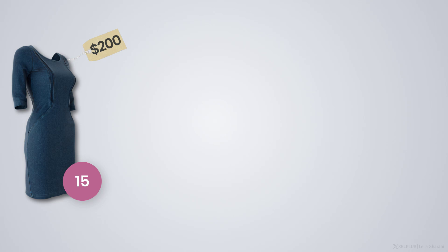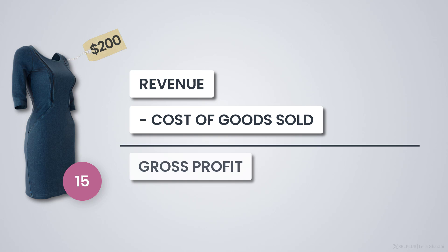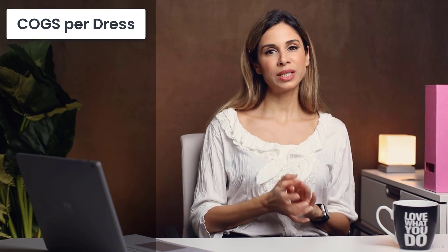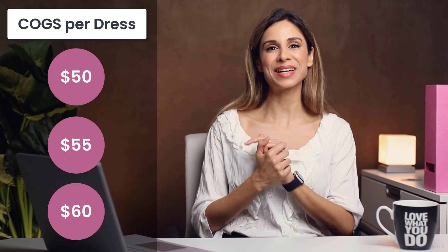Thankfully, yesterday you could reopen your store and you were already able to sell 15 of the dresses for $200. Now you're wondering: what was my profit for this sale? We know that revenue minus cost of goods sold equals gross profit. Your revenue was $3,000 — the sales price for the 15 dresses. Cost of goods sold is the price you had to pay your supplier in Italy, but the price was different each time. So do we deduct $50, $55, or $60 per dress as cost of goods sold?